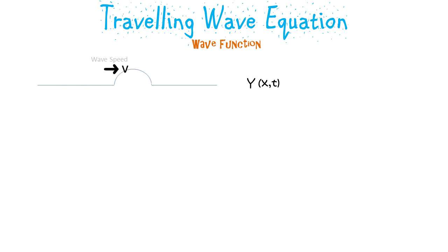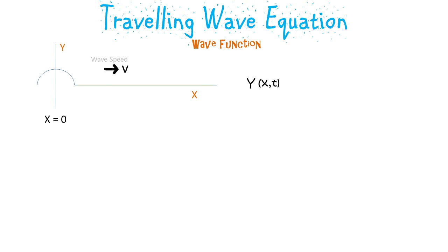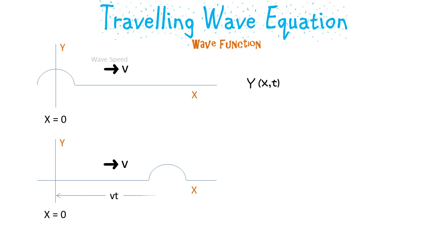This is a simple traveling wave traveling with speed v to the right. It is a function of x, and at x equal to zero we see the value of y. After time t, the wave would have traveled a distance vt to the right. One important property is that the value of y at x equal to vt is the same as at x equal to zero.